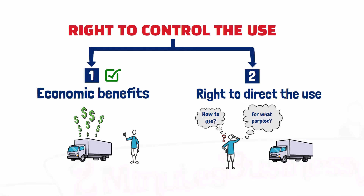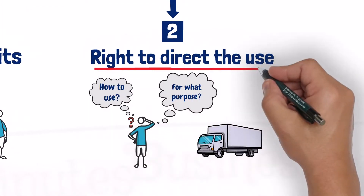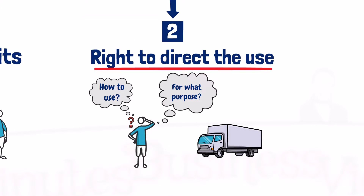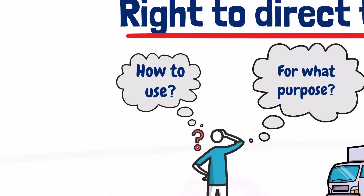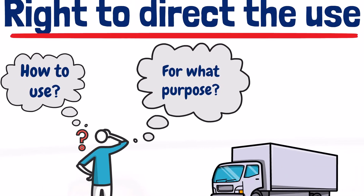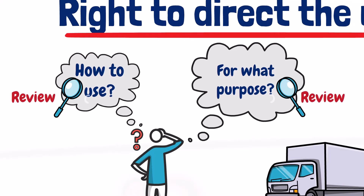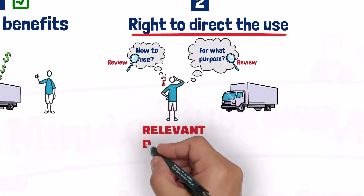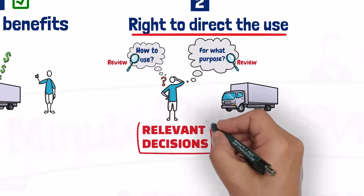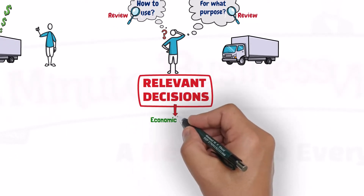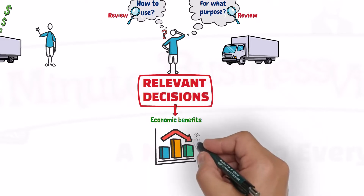The second condition that should be met for the customer to have the right to control the use of the asset is that the customer should have the right to direct the use of that asset during the period of use. This right allows the customer to decide about how the asset will be used and for what purpose it will be used, and also allows the customer to revise these decisions anytime during the period of use. These decisions should be relevant — meaning they should affect the economic benefits to be derived from the use of the asset.